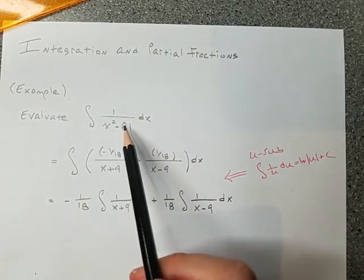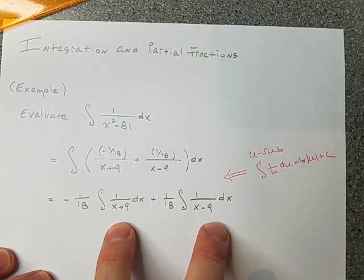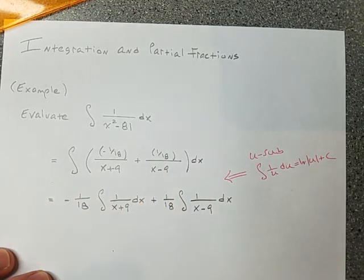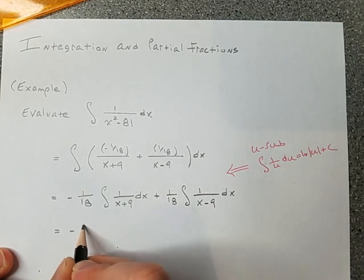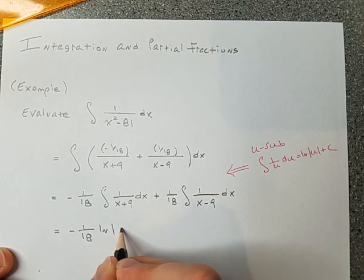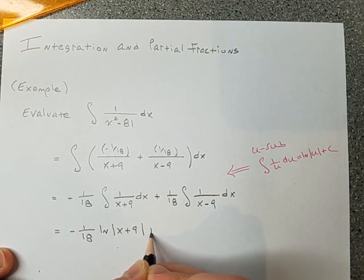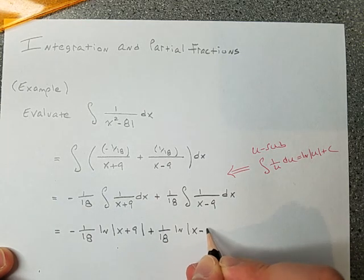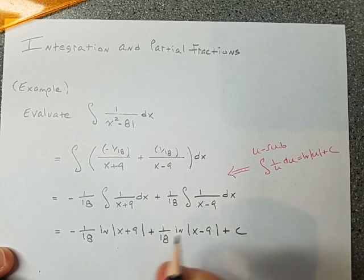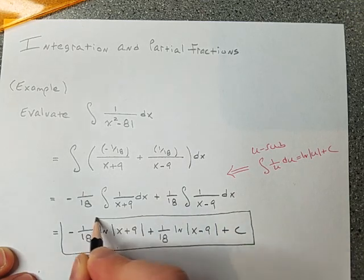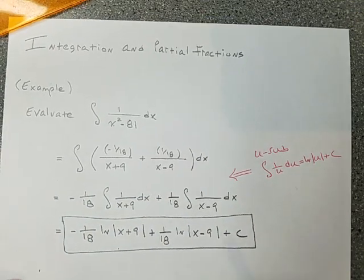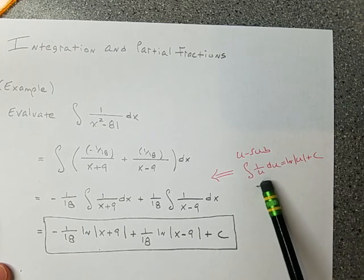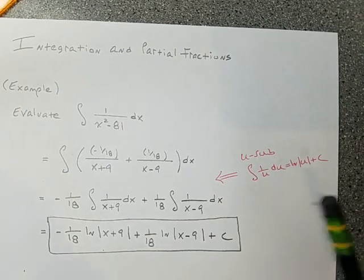So the breakdown lets me work with simpler integrals. The final answer is: negative 1 over 18 times natural log of absolute value of x plus 9, plus 1 over 18 times natural log of absolute value of x minus 9, plus C. That is how partial fractions work. You often get this 1 over u du form once the partial fraction decomposition is done — not every problem, but many of them.